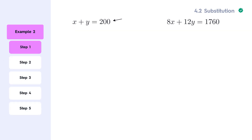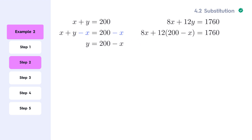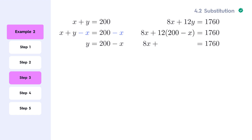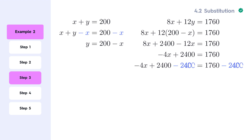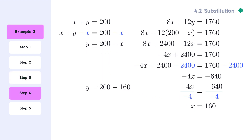Let's start by solving the first equation for y. We can start with subtracting x from both sides. This gives us y equals 200 minus x. Now that we have this, we substitute this expression into the second equation. We now have a one-variable equation and can solve for x. Let's start by distributing the 12 and combining like terms. Let's now subtract 2400 from both sides. If we divide both sides by negative 4, we get the value of x, which is 160. We can now substitute this value back into the equation y equals 200 minus x, to find the value of y.